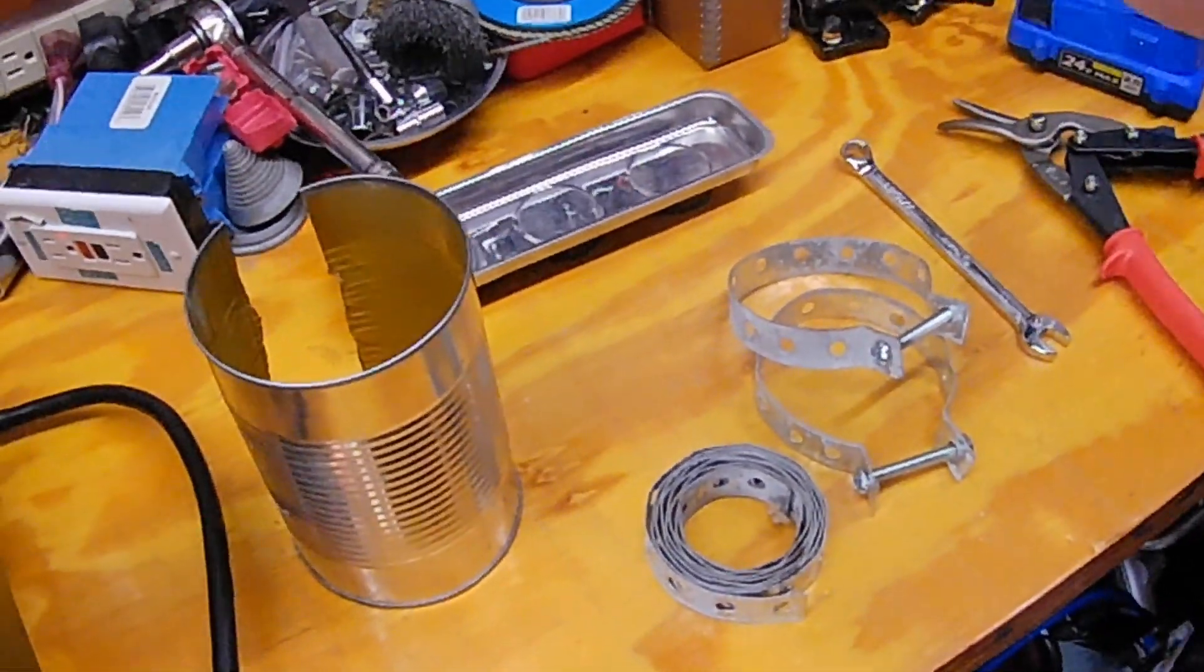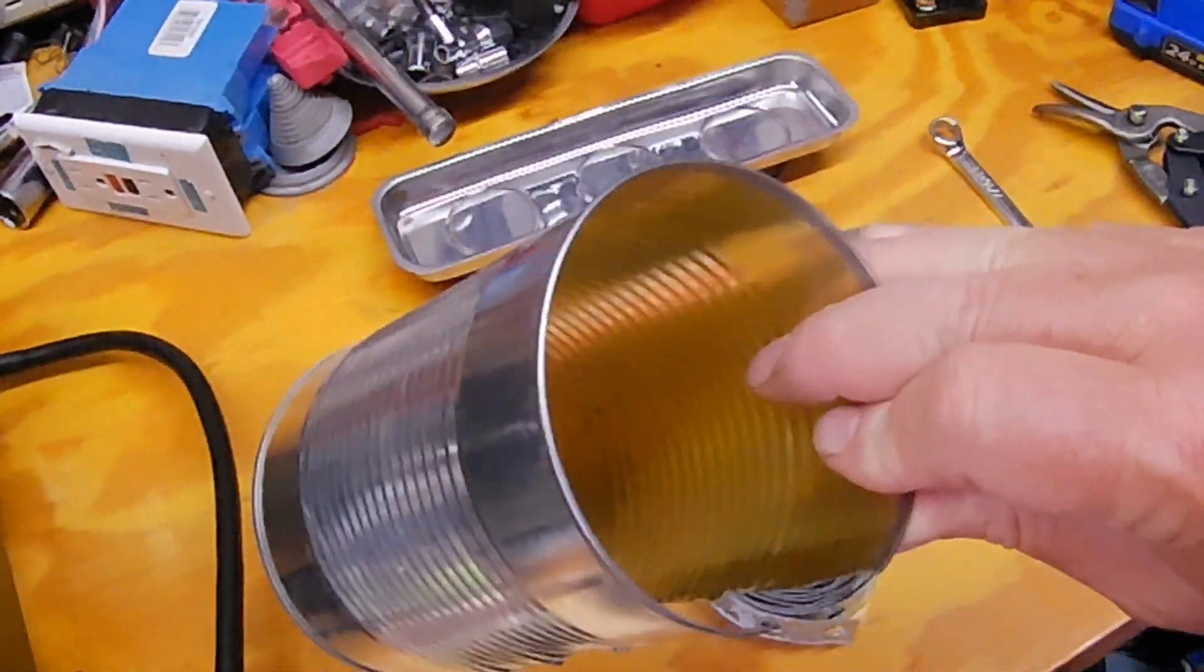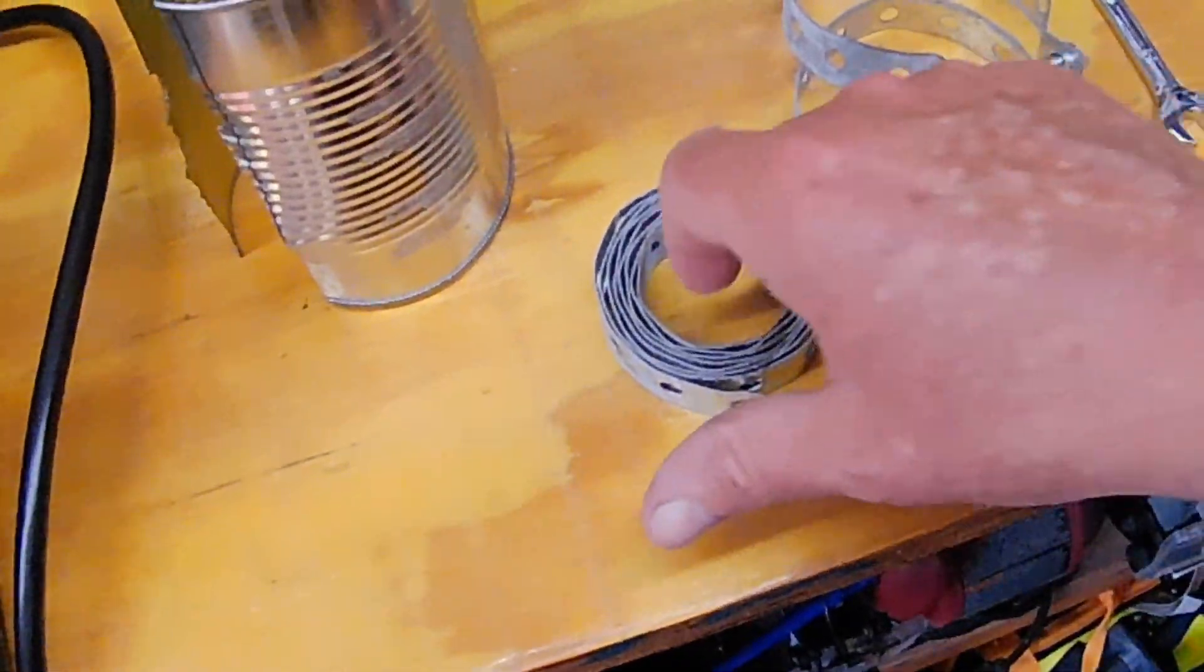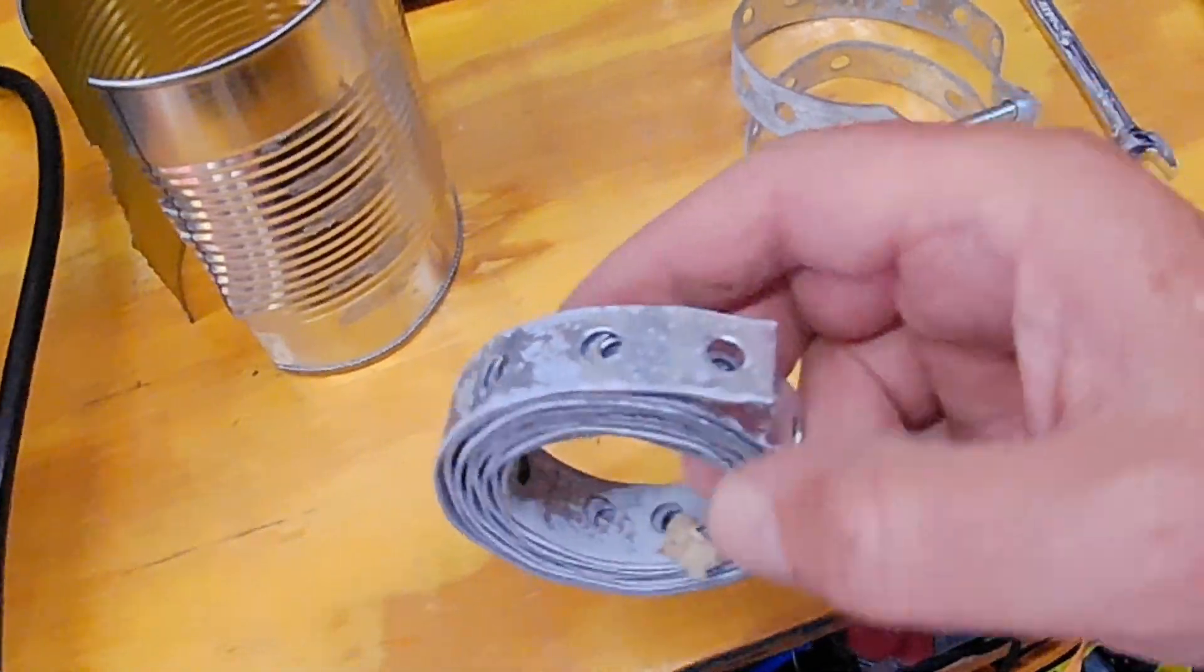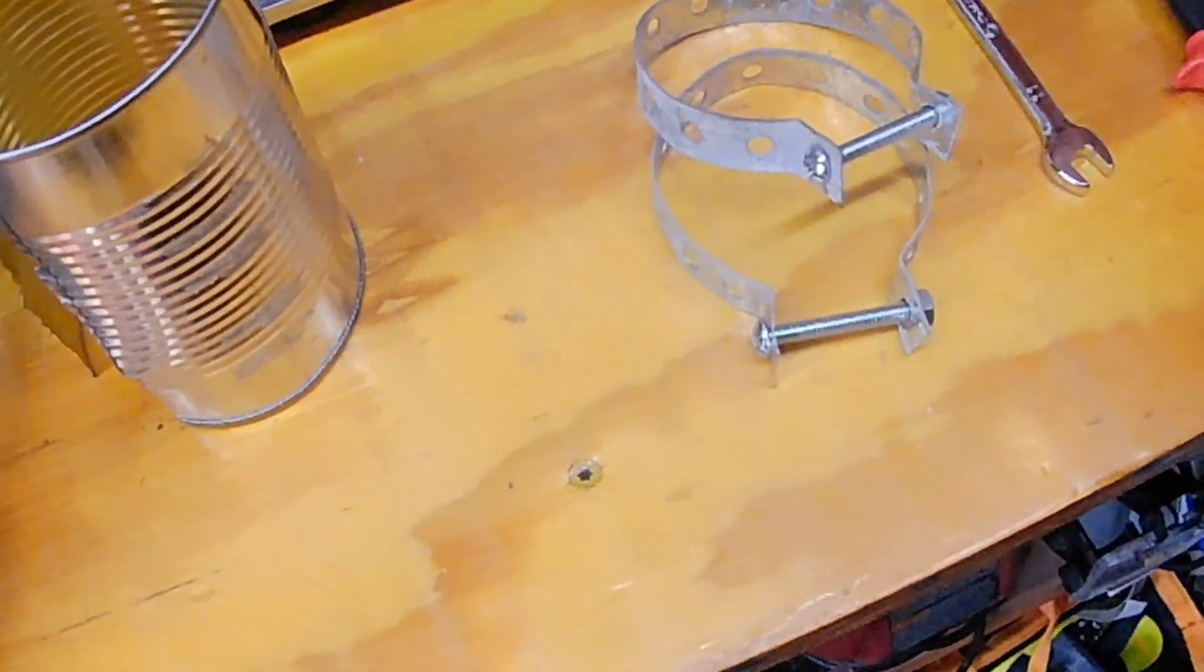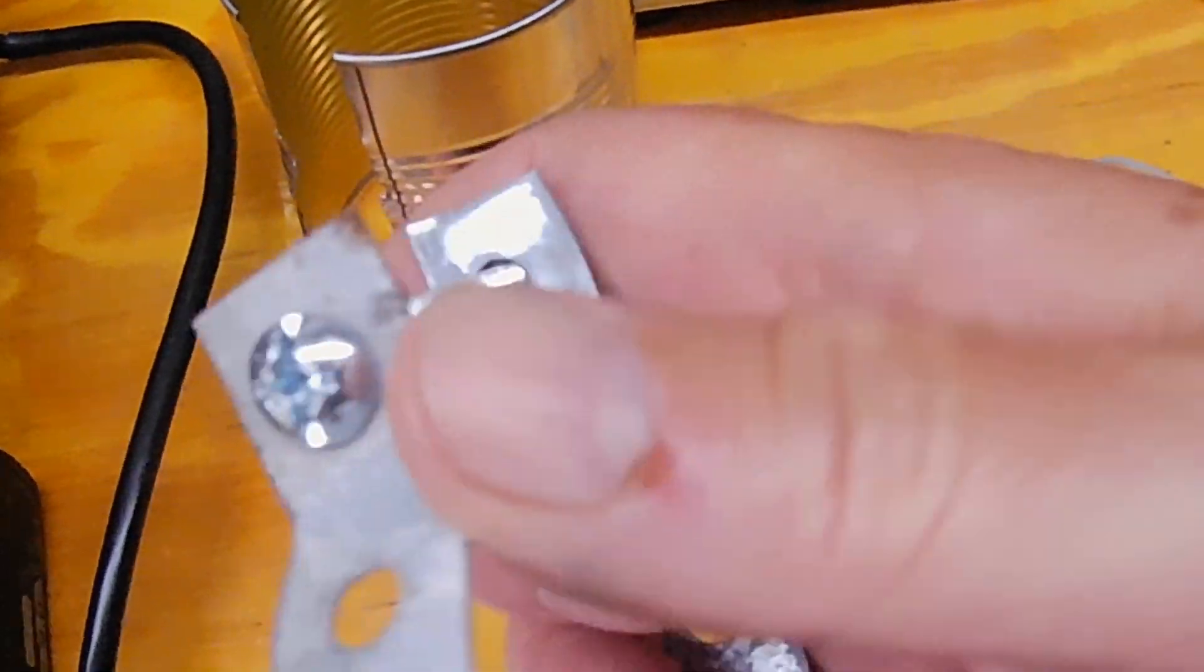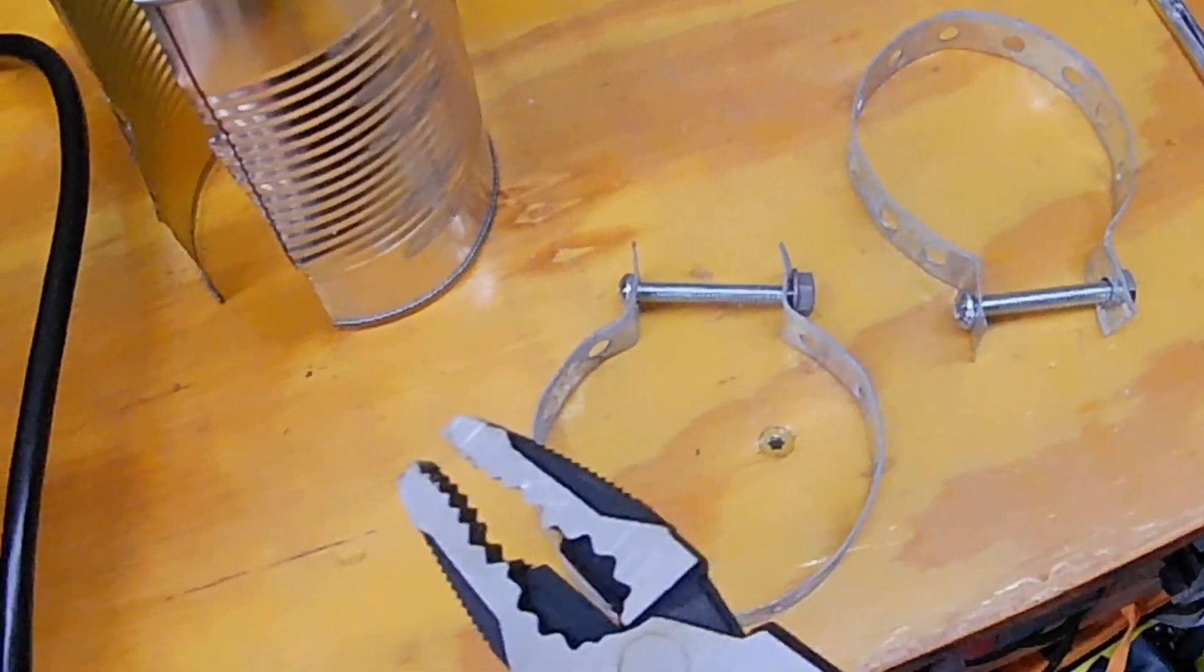I didn't have any muffler clamps, so I relied on old plumber's tape. This is just metal with a mesh of holes, it's galvanized. I wrapped it around my pipe and bent the ears out here. I bent them out with the pliers - this bends real easy. I found a long bolt and nut to put on there.